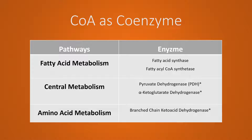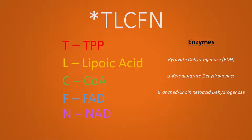Notice the asterisk placed beside the last three enzymes, which represents that these enzymes are part of your TLCFN enzymes. This is more useful for students studying for tests than for real-life practicality. The TLCFN enzymes are those three enzymes listed here, and they are called TLCFN because they all require the same five coenzymes: T for TPP, L for lipoic acid, C for CoA, F for FAD, and N for NAD.